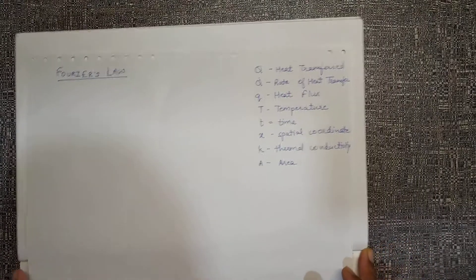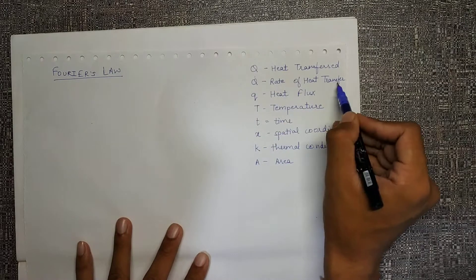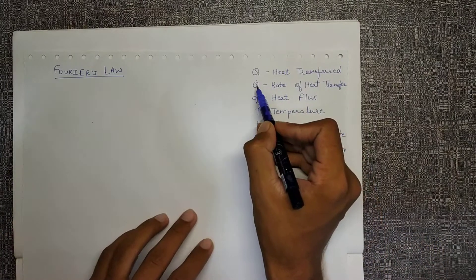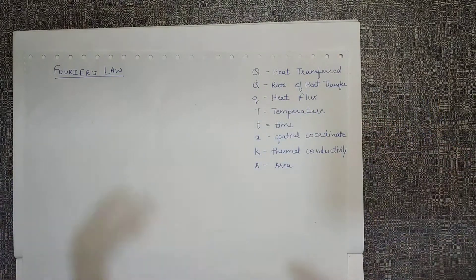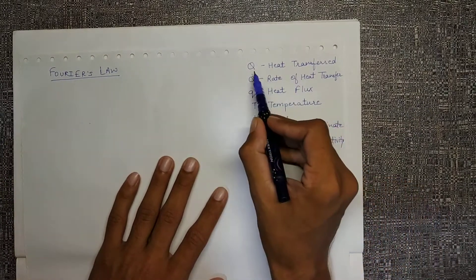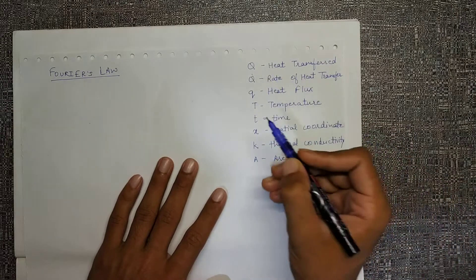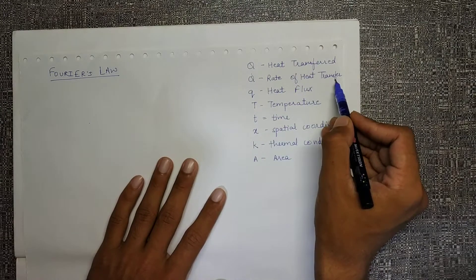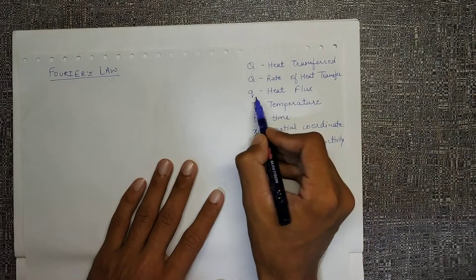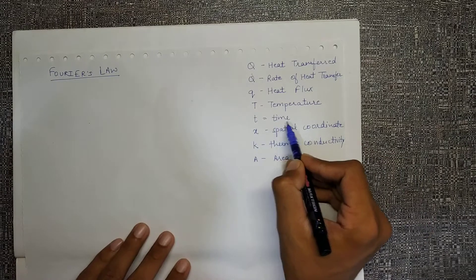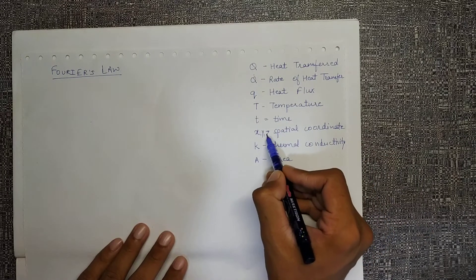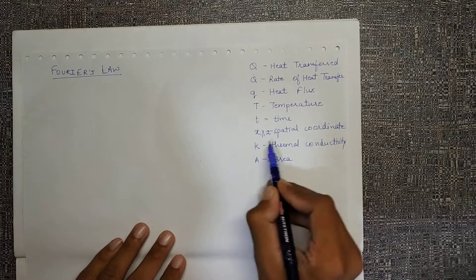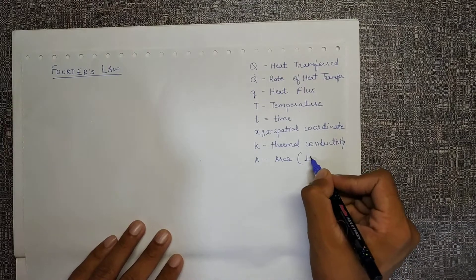A bit of clarification: I may have earlier used Q as the rate of heat transfer because generally Q and Q dot are not distinguished in the literature. For our convention, Q will be heat transferred having a unit of energy or joules. Q dot is the rate of heat transfer, small q is heat flux which I will define in a moment. T is temperature, small t is time, X along with Y and Z will be spatial coordinates. K is thermal conductivity, and A is area or perpendicular area.